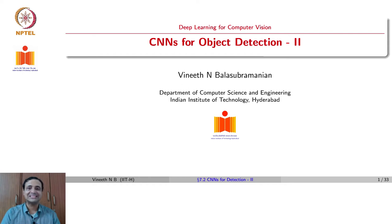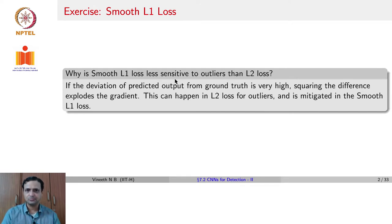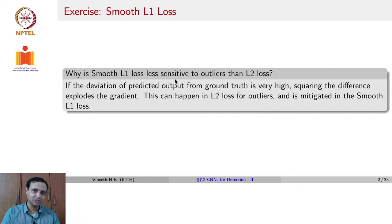We will continue now with dense sampling methods for object detection. Before we go there, the exercise from the last lecture: why is smooth L1 loss less sensitive to outliers than L2 loss? When the deviation of the predicted output from the ground truth is high, which happens with outliers, the squared loss or L2 loss exaggerates the deviation, which also causes the gradient to exaggerate it, potentially causing an exploding gradient problem. This issue gets mitigated with L1 loss. Because L1 loss is not differentiable at 0, we use a smooth version known as smooth L1 loss, which mitigates the problems caused by outliers.